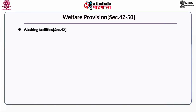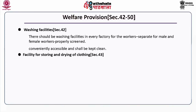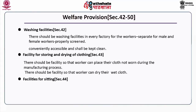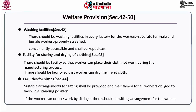Washing facilities under Section 42: there should be washing facilities in every factory for workers, separate for male and female workers, properly screened, conveniently accessible and kept clean. Under Section 43, facilities for storing and drying of clothes: workers should be able to place clothes not worn during the manufacturing process, and there should be facilities to dry wet clothes. Under Section 44, facilities for sitting: suitable arrangements for sitting shall be provided and maintained for all workers obliged to work in the standing position. If a worker can do the work by sitting, there should be sitting arrangements provided.